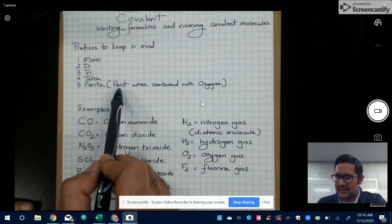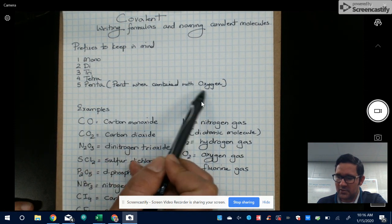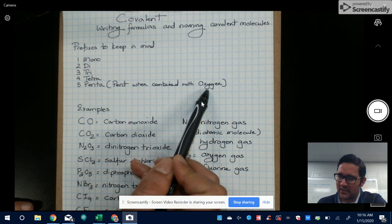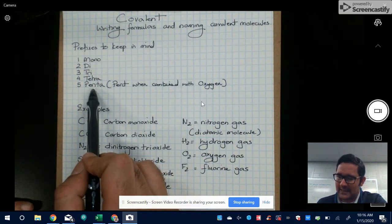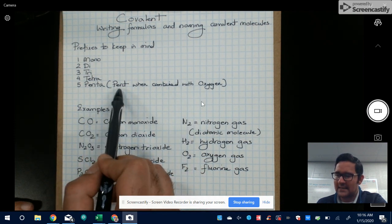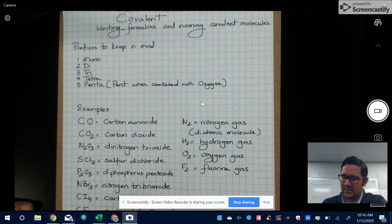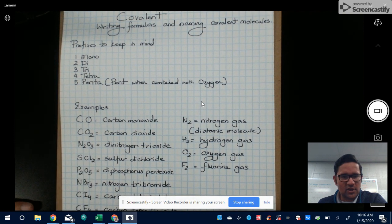Penta sometimes becomes pent when it's being combined with oxygen. So if you're dealing with a compound that has five oxygens, you won't call it pentaoxide, you'll call it pentoxide. So that's just a slight change.